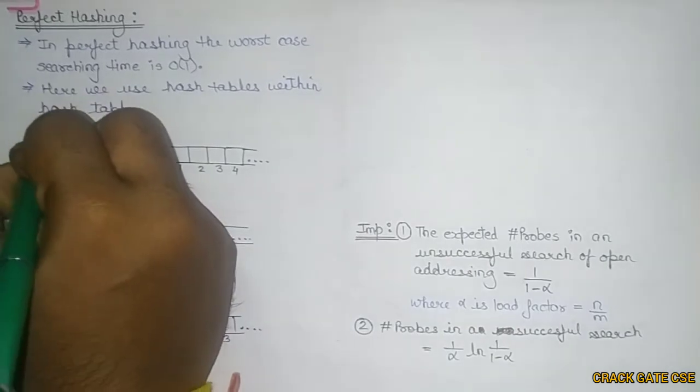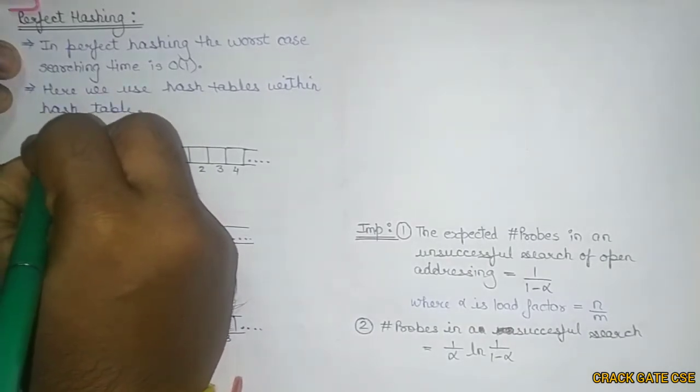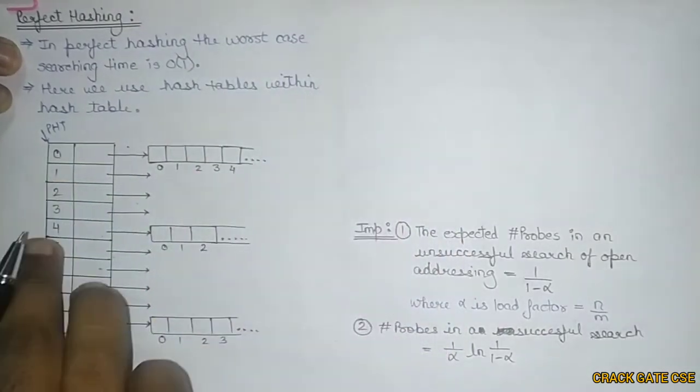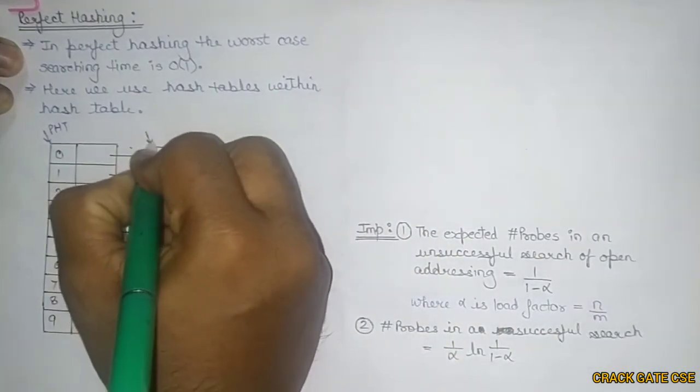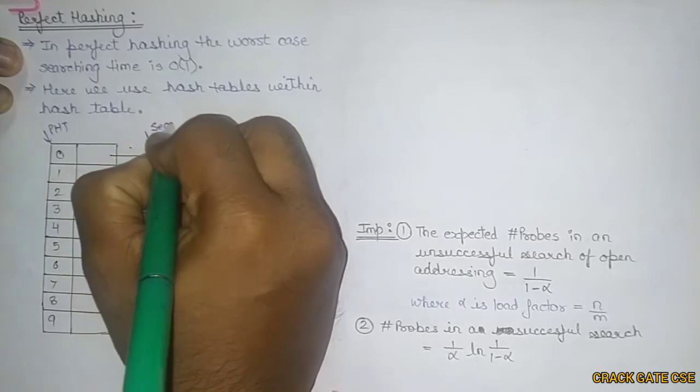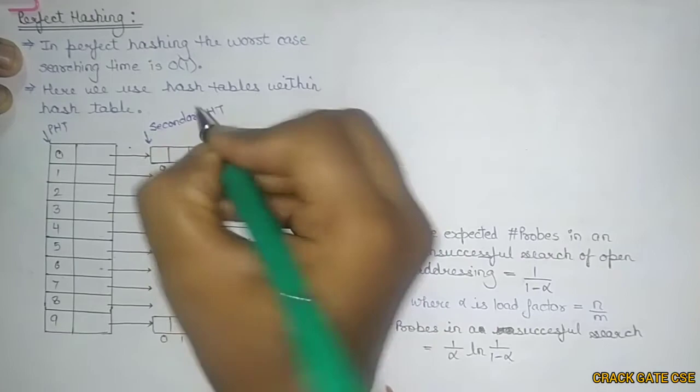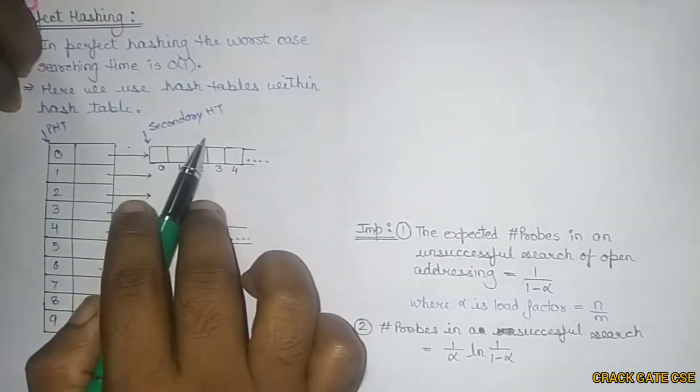Perfect hashing is hashing within hashing. One table will be the primary hash table, and whatever hash tables are inside this primary hash table will be the secondary hash tables.